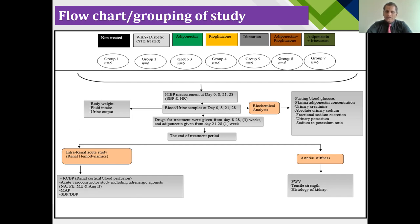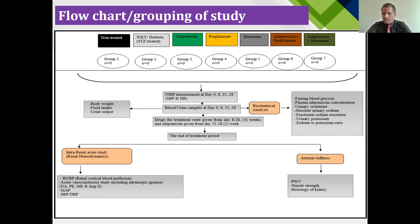We obtained body weight, fluid intake, and urine output as metabolic parameters. Non-invasive blood pressure was measured on day 0, then before giving the STZ at day 8. The treatment protocol was studied up to day 21, when we started giving adiponectin from day 21 to 28. Blood and urine samples were collected at the respective days, and biochemical analysis was done measuring fasting blood glucose, plasma concentration, urinary creatinine, absolute and fractional sodium excretion, urinary potassium, and the urine sodium-potassium ratio.